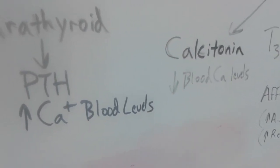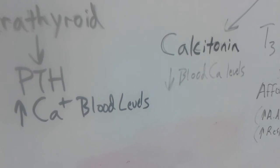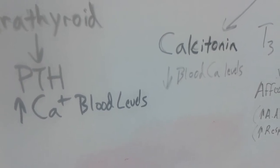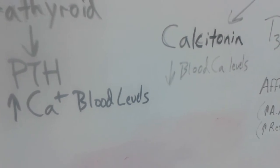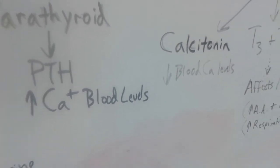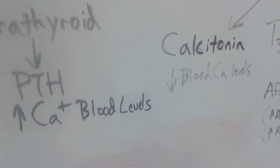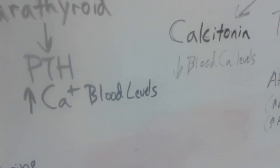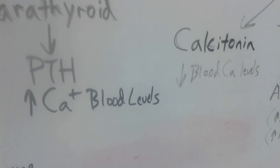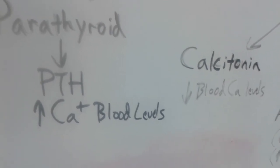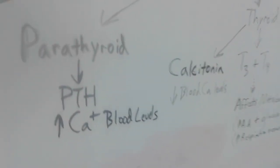And PTH does the exact opposite of calcitonin. PTH increases calcium in the blood levels while calcitonin decreases calcium blood levels. You can see them right beside one another and you can see one arrows going up one arrows going down. The way that I learned this and remember it is calcitonin tones down blood calcium levels, PTH picks calcium levels up and that helped me remember these two hormones and the difference between the two.